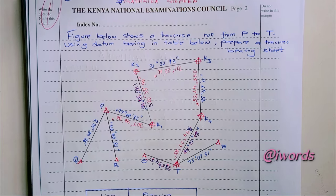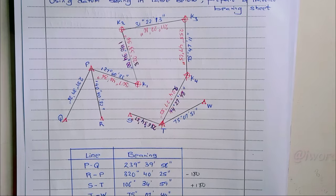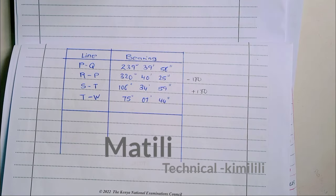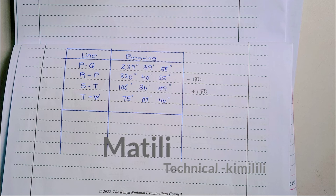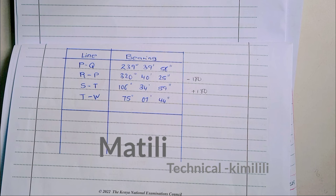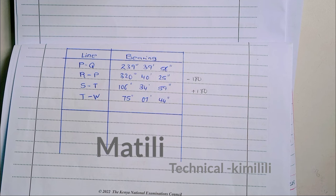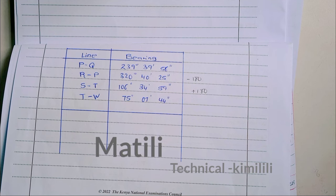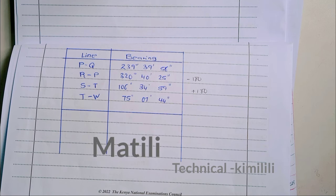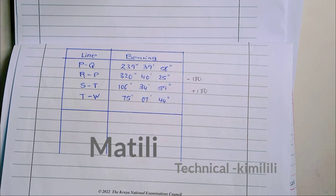We also have a datum bearing table. These are the known datums from all those points. From P to Q: 239°39'56". From R to P: 320°40'25". From S to T: 106°34'39". From T to W: 75°07'44".